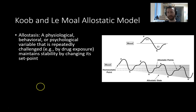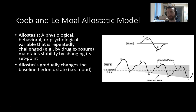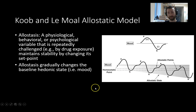An important concept here is allostasis: a physiological, behavioral, or psychological variable that is repeatedly challenged — for example, by drug exposure — changes its set point in order to maintain stability. Allostasis is the moving of your set point, your new normal, to a different state. It gradually changes the baseline hedonic state — the base mood state. You might start at your homeostatic point, but allostatic forces push that default mood state lower and lower with repeated cycles of preoccupation, binge intoxication, and withdrawal, causing a gradual downshift of your set point with each repetition.